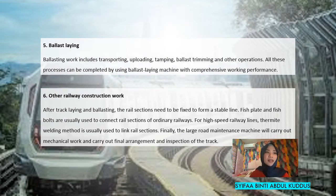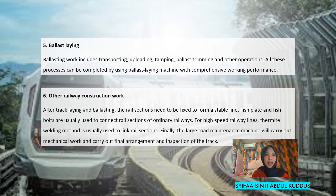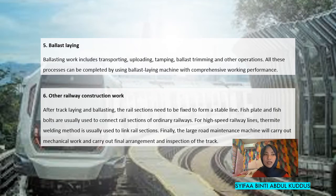The fifth step is ballast laying, which includes transporting, unloading, tamping, ballast trimming, and other operations — all completed using a ballast laying machine with comprehensive working performance. The sixth and last step covers other railway construction work after track laying and ballasting. The rail sections need to be fixed to form a stable line. Fish plates and fish bolts are used to connect rail sections of ordinary railways. For high-speed railway lines, thermite welding is used to link rail sections. Finally, large road maintenance machines carry out mechanical work and the final arrangement and inspection of the track.